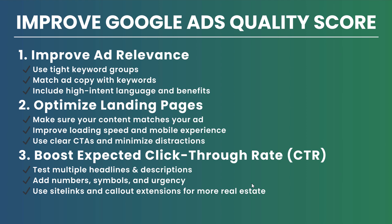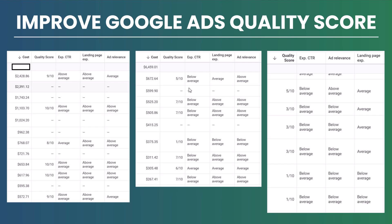Here are examples pulled from accounts I manage. Looking at top keywords over 30 days by spend: our number one keyword had almost $2,500 spend with a 9 out of 10 quality score. If you see no quality score reported, don't panic — Google may not have enough data to report one for that keyword but is likely using a quality score internally. Overall, these accounts show pretty high quality scores — above average or average across the board.